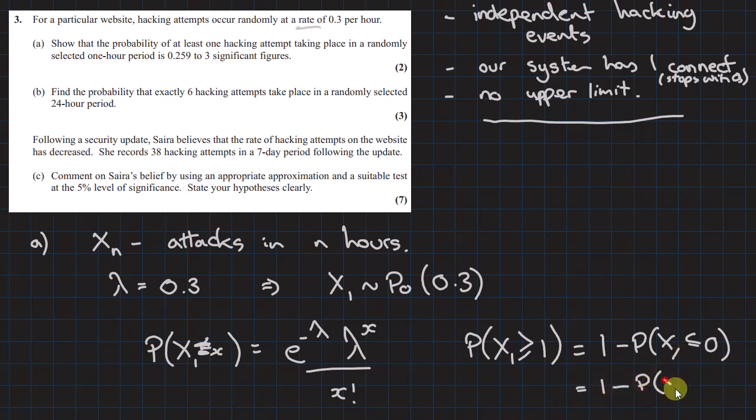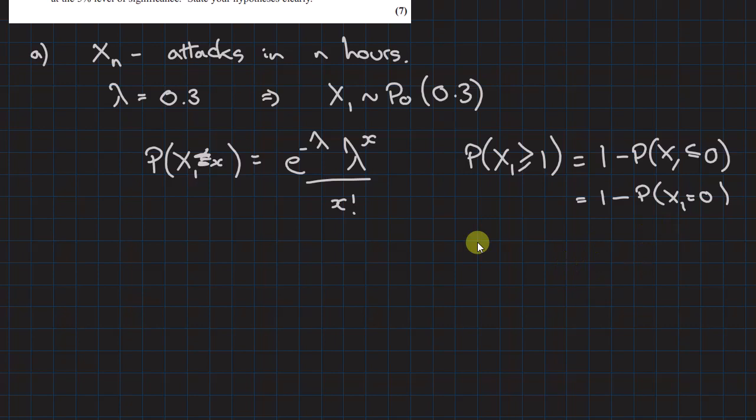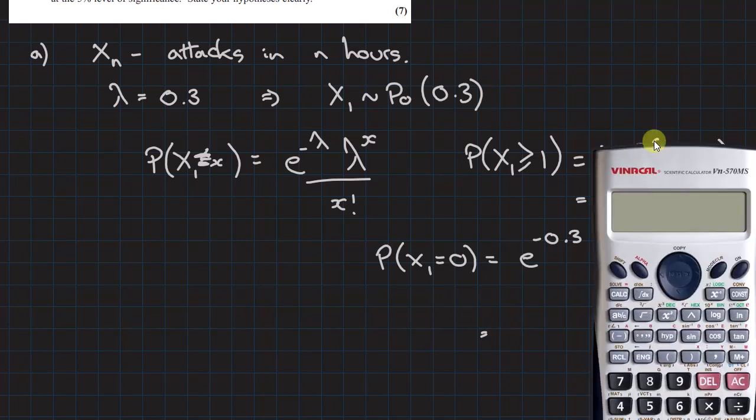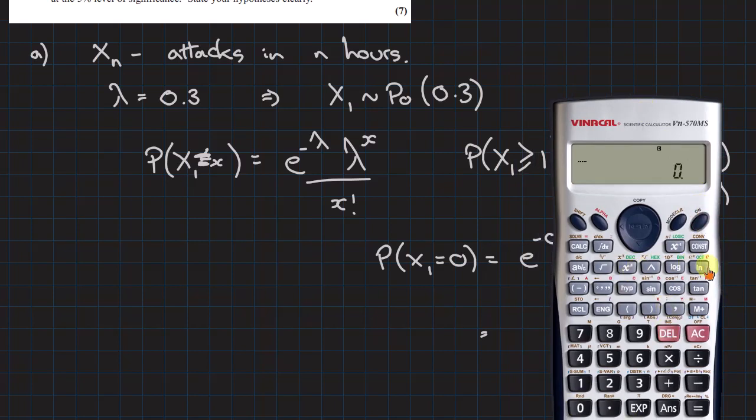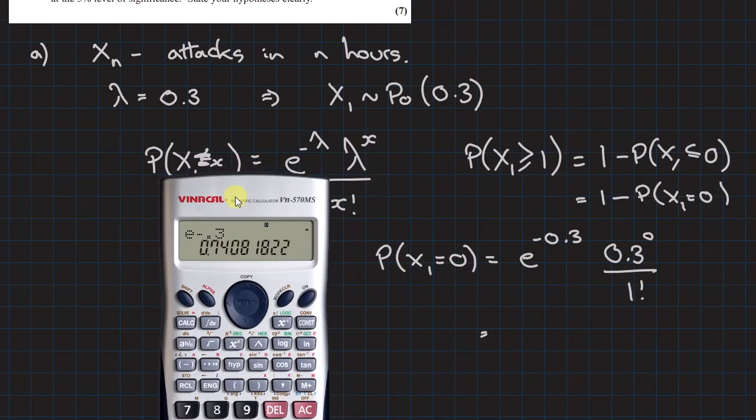Therefore we need to calculate the Poisson for x equals 0. So put our values in: P(X1=0) equals e to the minus 0.3, and 0.3 to the power of 0 which is 1, and 0 factorial. These both equal 1, so it's just e to the minus 0.3. We're doing e which is shift and log of minus 0.3.